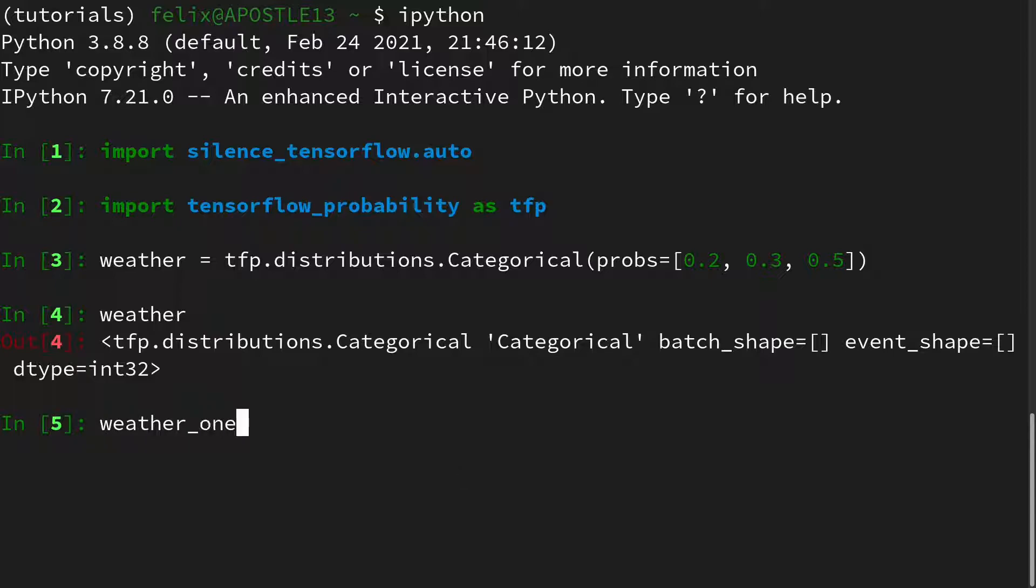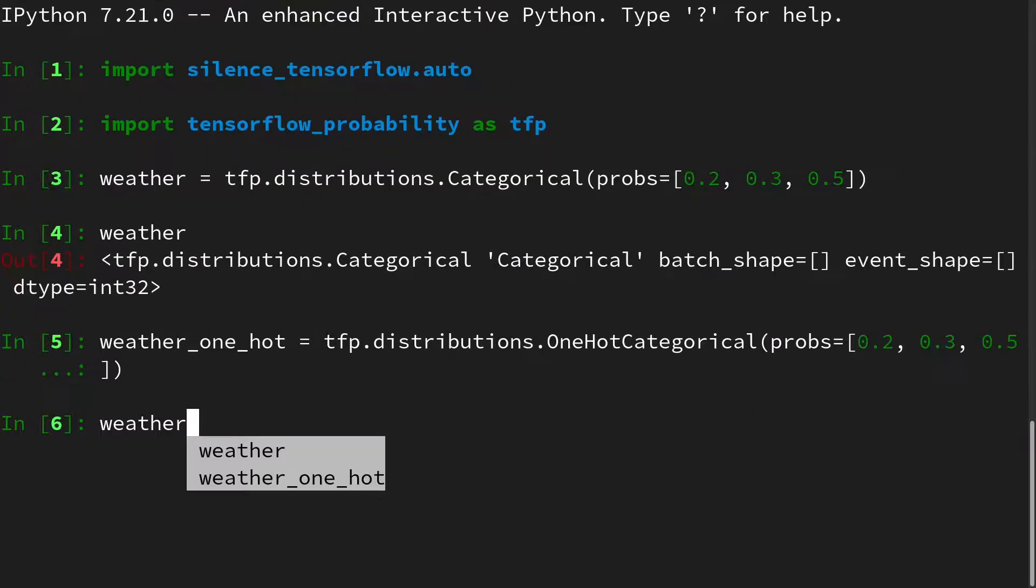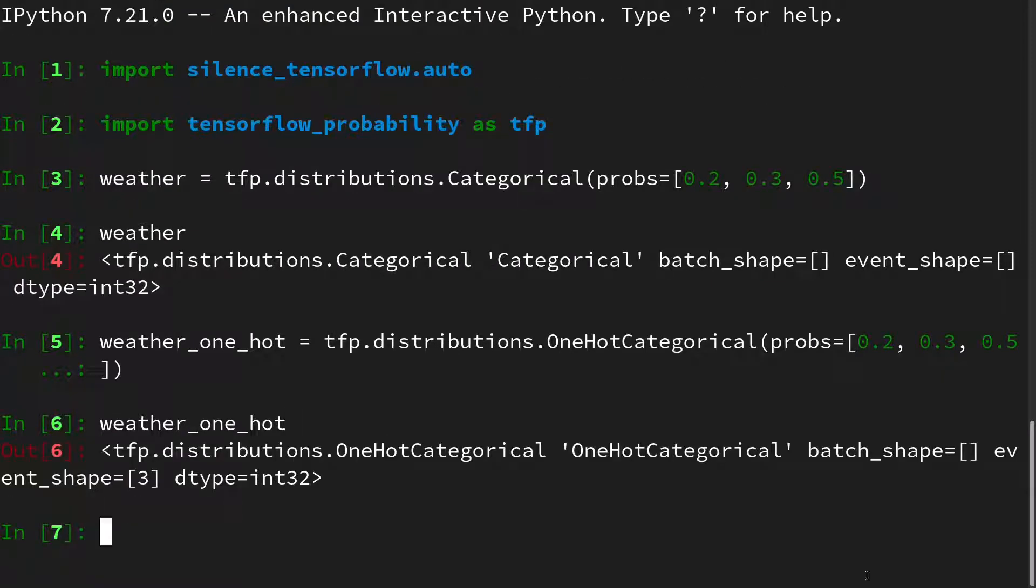Then we can look at its one-hot companion. And for this we will use the distributions one-hot categorical. And it has the same interface, so we provide it with the probability vector, 0.3 or the theta vector. And if we look at it here, then we see, okay, it's a one-hot categorical.